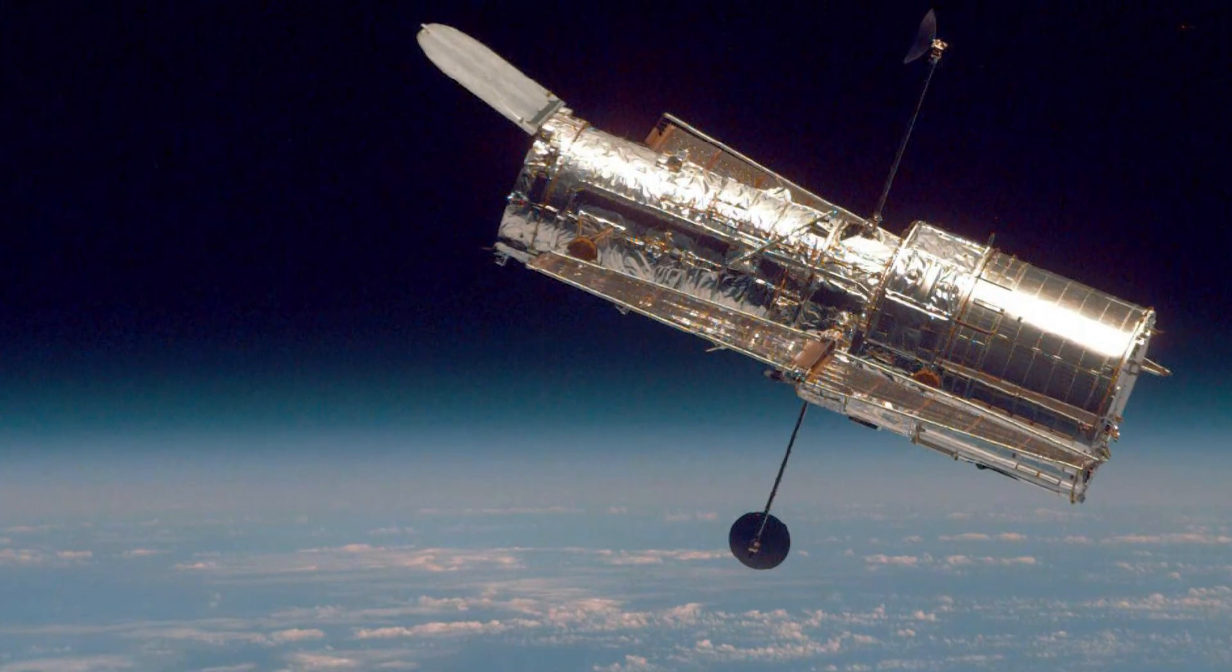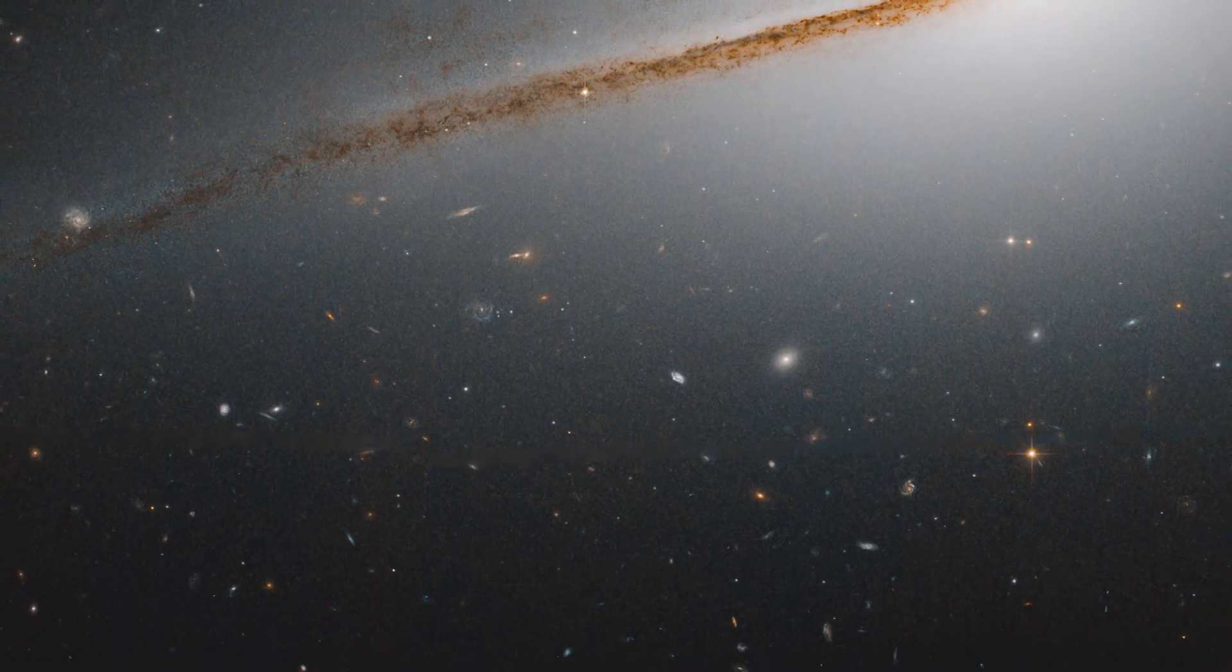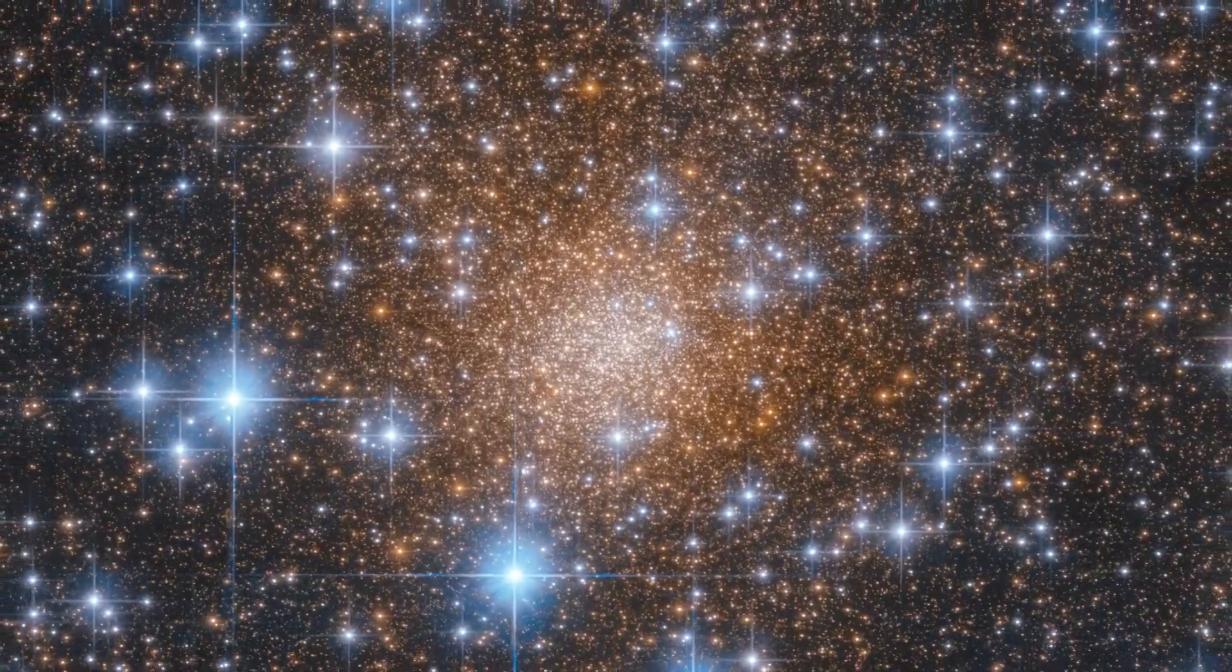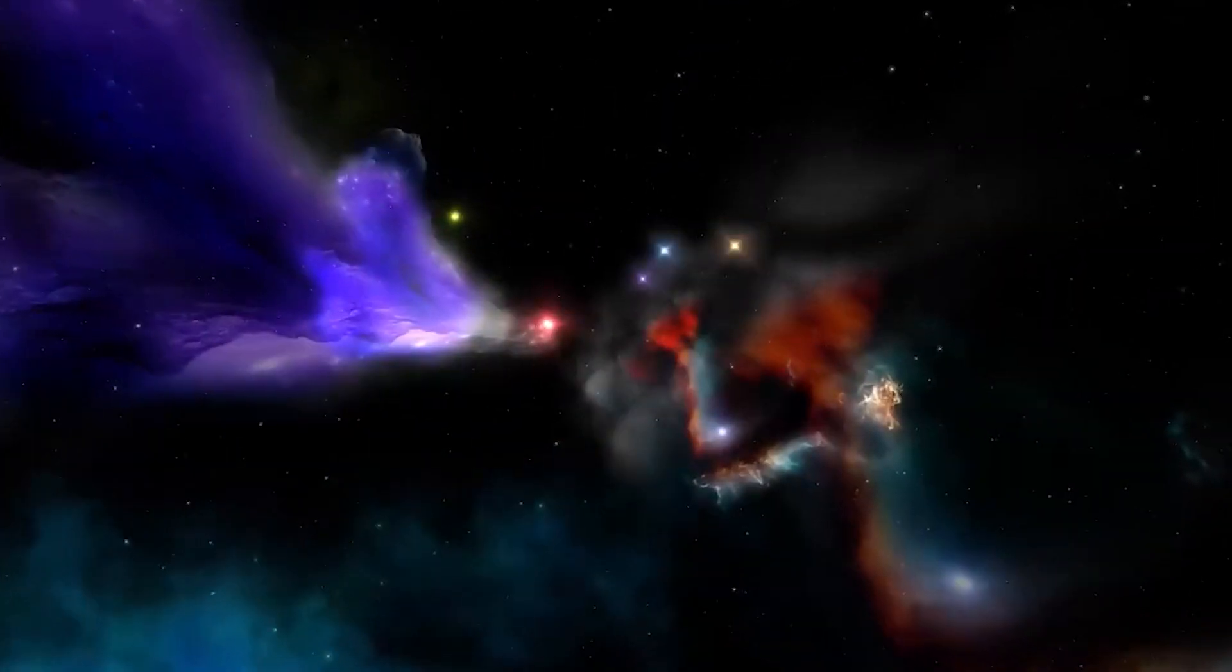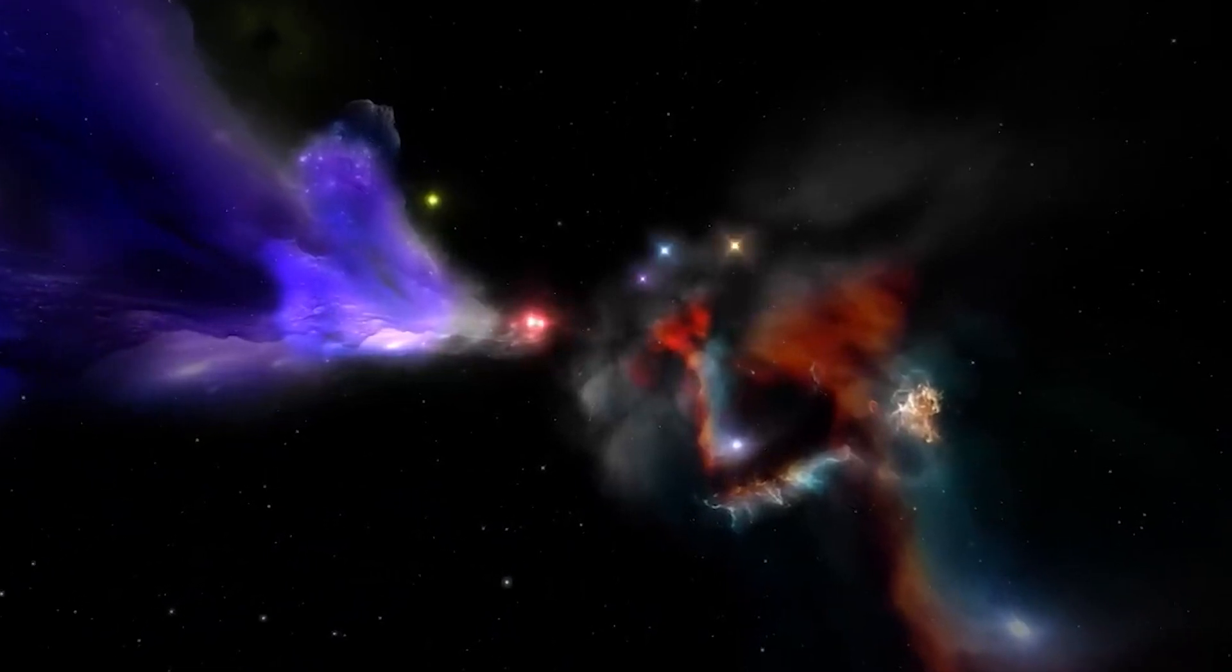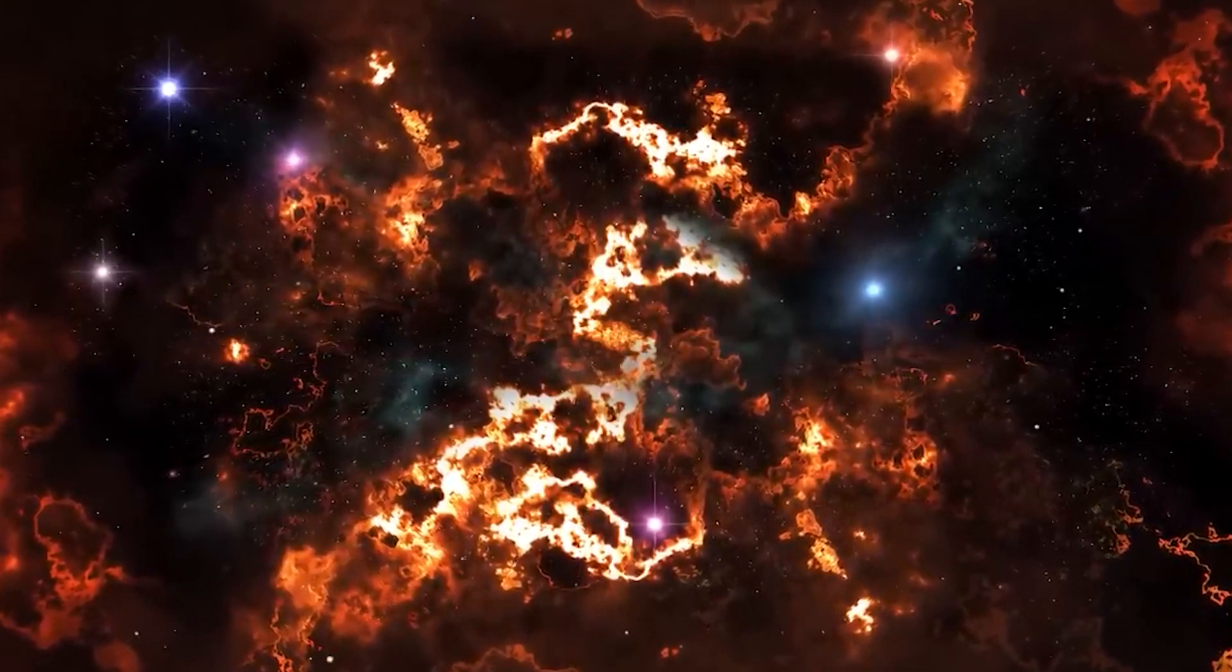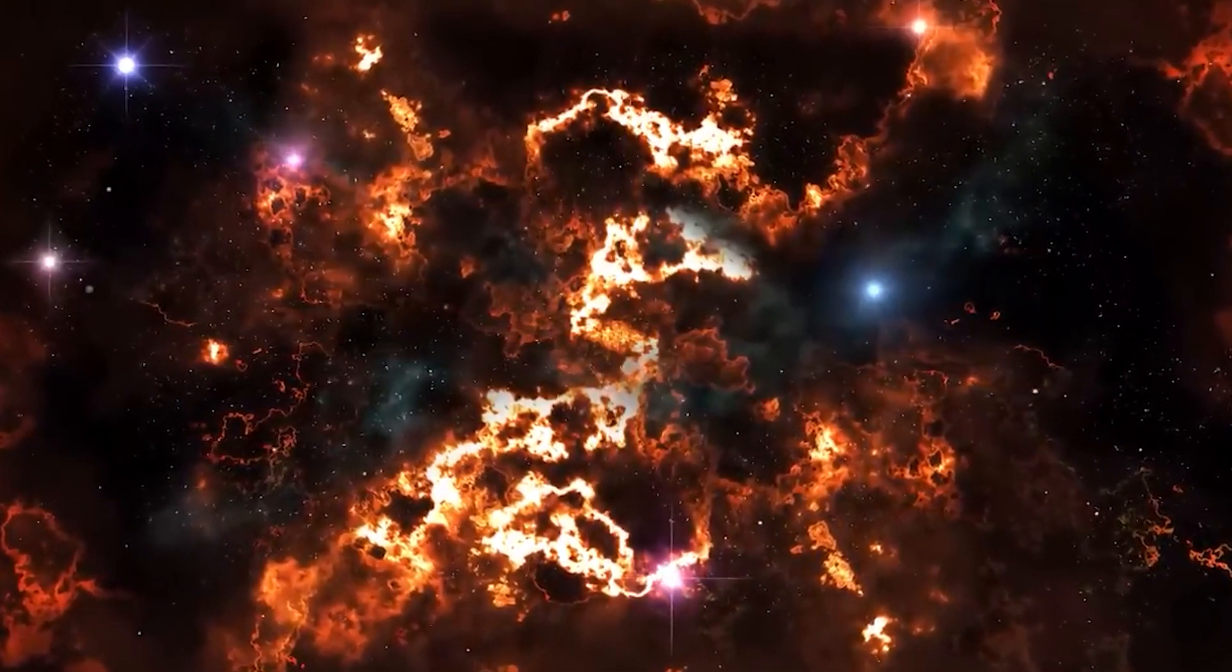The image crafted by Hubble portrayed WR-124 in a vibrant manner, capturing a dynamically charged environment. The star itself occupied the central spotlight, a luminous beacon set against a backdrop of expelled gases. Within this image, a conspicuous element emerged in the form of gas clusters, seemingly propelled into space at velocities surpassing 150,000 km per hour. This stands as a testament to the vigorous and energetic processes transpiring within and around the star.